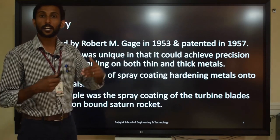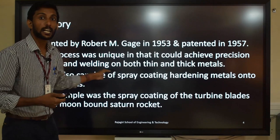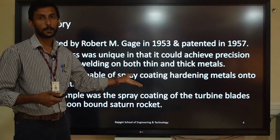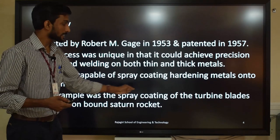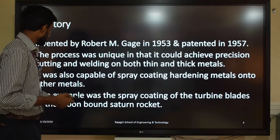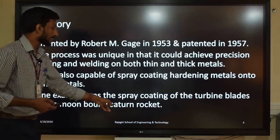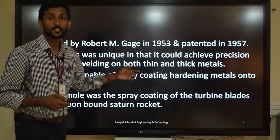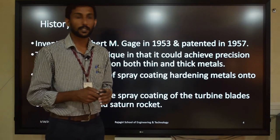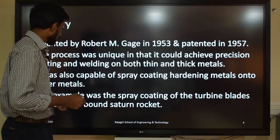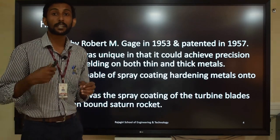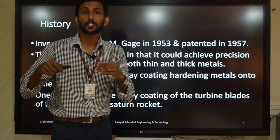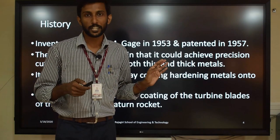Later, the technology was developed for plasma coating as well. One interesting fact is that in the Saturn rocket — the moon-bound Saturn rocket — the turbine blades were coated using the plasma coating method.